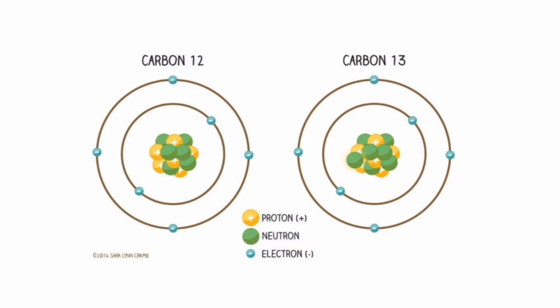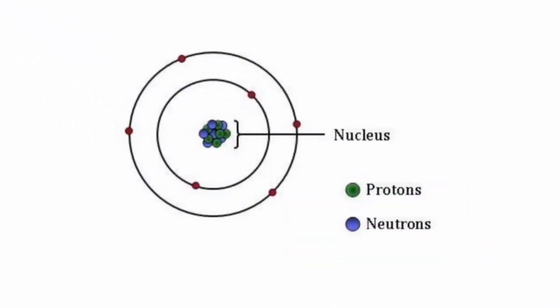The final building block of the atom is known as the electron. If we go back to our carbon-12 atom, we can assume that the atom is neutral, which is a term I will go into further depth later on.